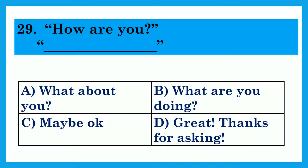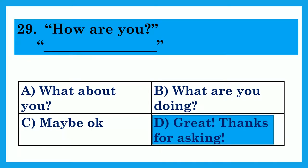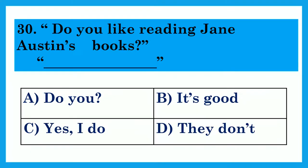How are you? Dash. Option A: What about you? Option B: What are you doing? Option C: Maybe okay. Option D: Great, thanks for asking. The answer is Option D: Great, thanks for asking. Do you like reading Jane Austen's books? Dash. Option A: Do you? Option B: It's good. Option C: Yes, I do. Option D: They don't. The answer is Option C: Yes, I do.